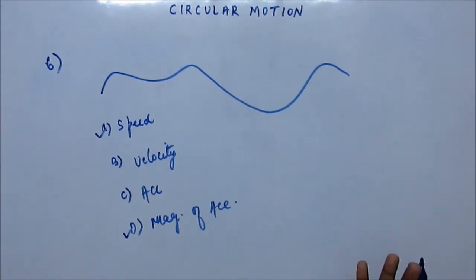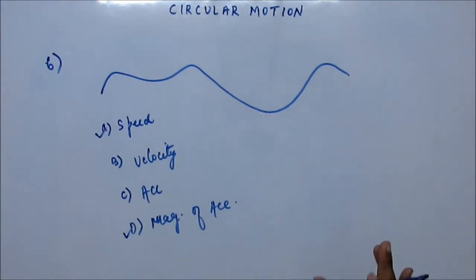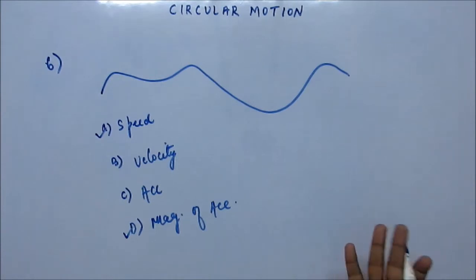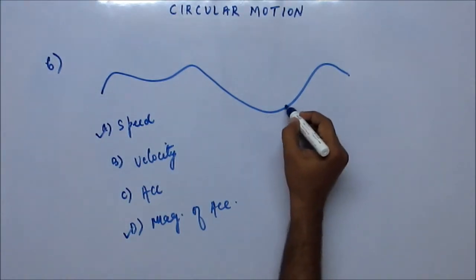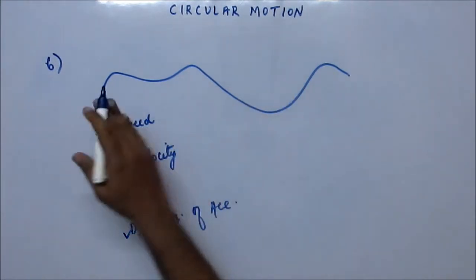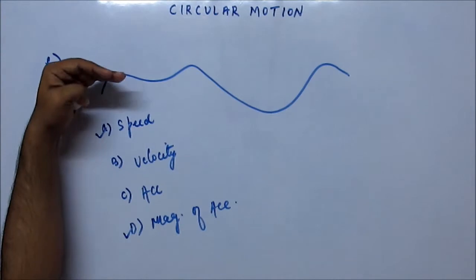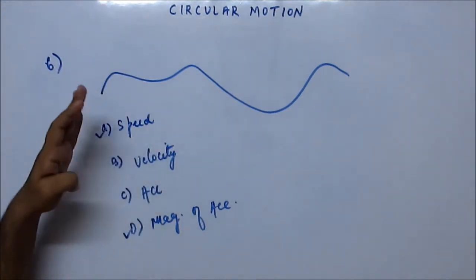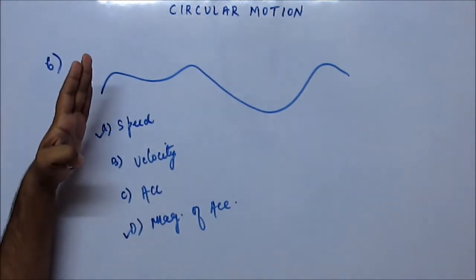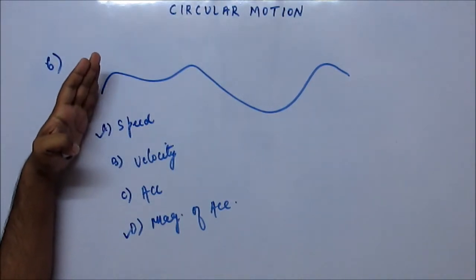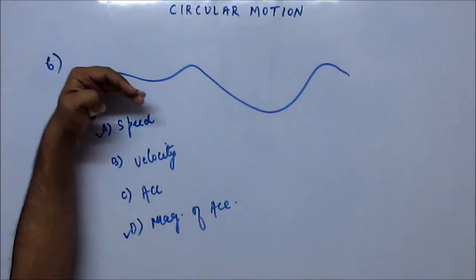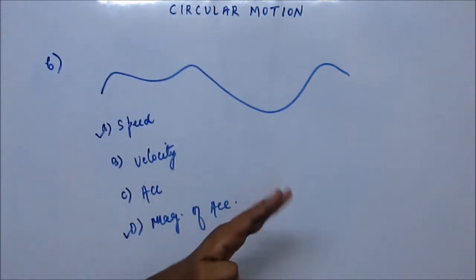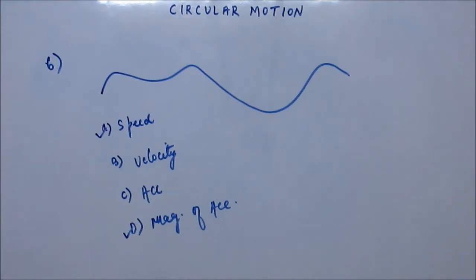Velocity can never remain constant because even if you make the magnitude of velocity constant, the direction would be changing. Each time you're going on a different path, on a different line — if you're going on this curved path, the direction to which you would be pointing would change continuously. So the direction of velocity would change continuously; velocity cannot remain constant.